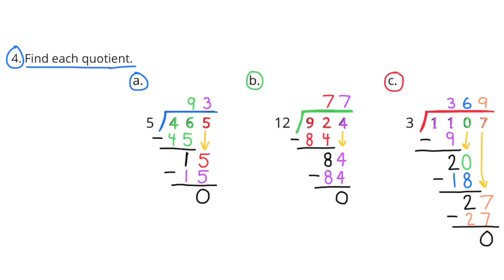C, 1107 divided by 3. Well, I know that 3 times 3 is 9, so 300 times 3 would be 900. But since we haven't brought down the 10s place yet, we'll need to bring down the 10s place. And we're going to treat this like 110 minus 90. And 110 minus 90 is 20. 6 times 3 is 18. 20 minus 18 is 2. Now we're going to bring down the 7 in the 1s place.